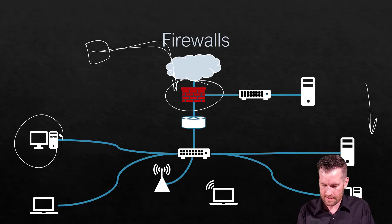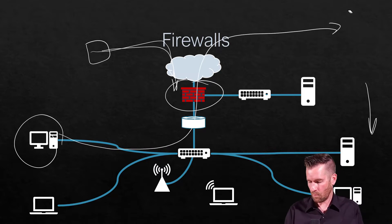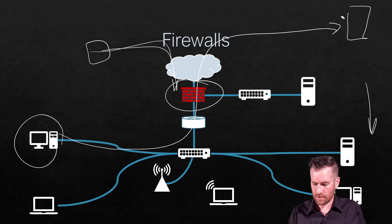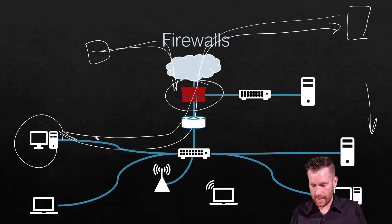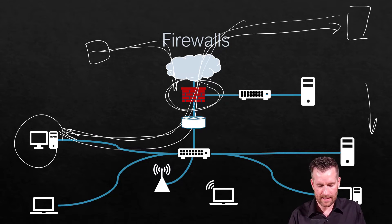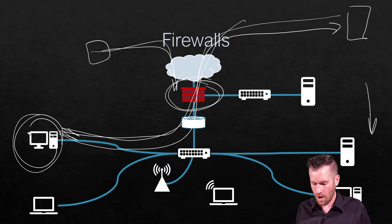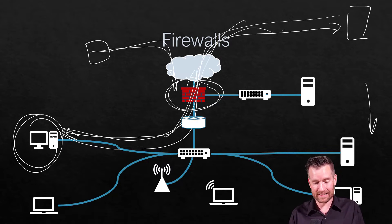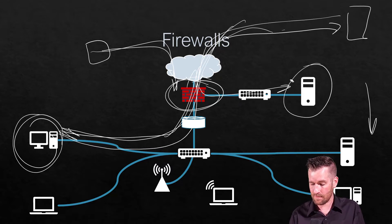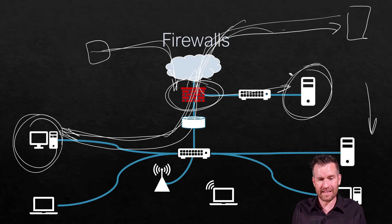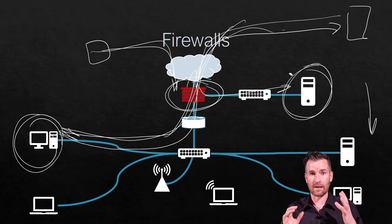If a machine sends out a request for a web server on the internet, that web server replies back to that computer, and the firewall will allow that return traffic to come back in. We also have granular control — we can set it up to only allow certain traffic out, or allow certain traffic in, such as to a DMZ web server.